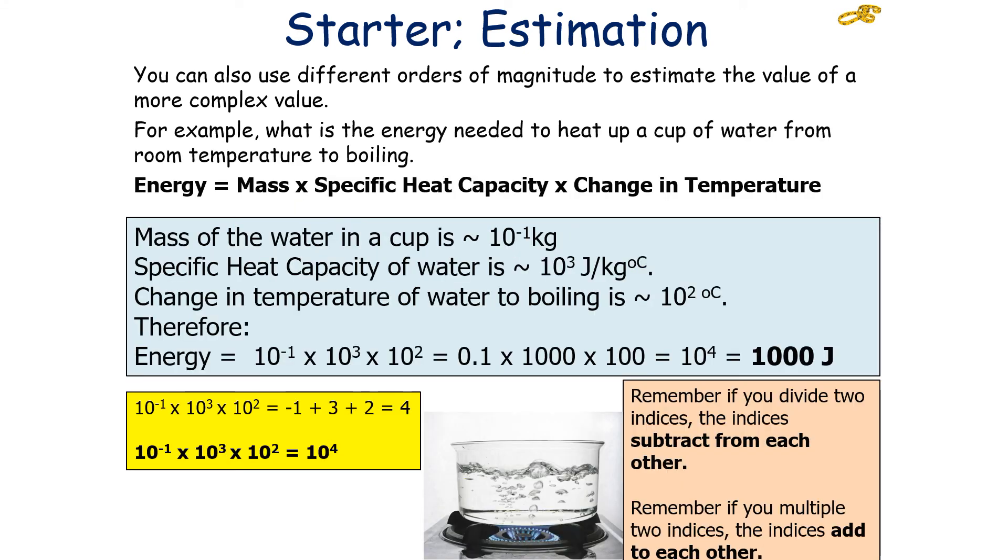Another example could be, estimate the energy needed to boil up a cup of water from room temperature to boiling. You know the equation is E equals mass times by specific heat capacity times by the change in temperature. What you've got to do is you estimate all the quantities, so the mass of the water in the cup, maybe 10 to the minus 1 kilograms, the specific heat capacity of water, about 10 to the 3 joules per kilogram per degree Celsius, and the change in temperature of water to boil in is about 10 to the 2, 100 degrees Celsius. Therefore, when you are then working out the energy, it's 10 to the minus 1 times by 10 to the 3 times by 10 to the 2.